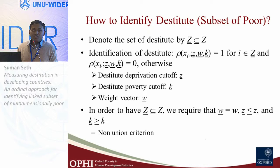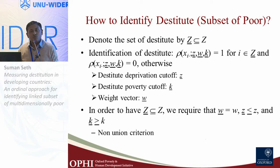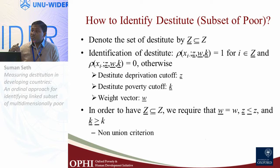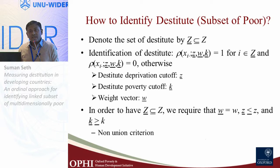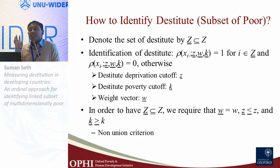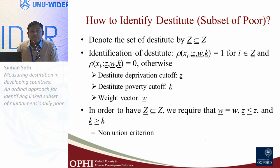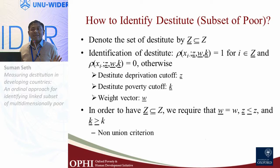To identify the destitute — who must be a subset of the multidimensionally poor — we can use a deeper deprivation cutoff, a more stringent poverty cutoff, or a different weight vector. If we follow a non-union approach requiring deprivation in at least two indicators to be identified as multidimensionally poor, it turns out the weight vector must remain the same, the deprivation cutoff vector must be deeper, and the poverty cutoff must be higher. That is the condition to identify a subset of the multidimensionally poor.